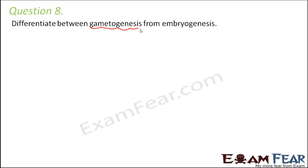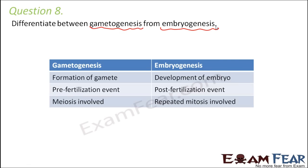Question number eight: differentiate between gametogenesis and embryogenesis. Gametogenesis is the formation of gametes, while embryogenesis is the formation and development of the embryo. Gametogenesis occurs before fertilization, so it is a pre-fertilization event; embryogenesis occurs after fertilization, so it is a post-fertilization event. Meiosis is involved in gametogenesis since gametes are formed from diploid meiocytes, whereas repeated mitosis and cell differentiation are involved in embryogenesis to develop the embryo from the zygote.